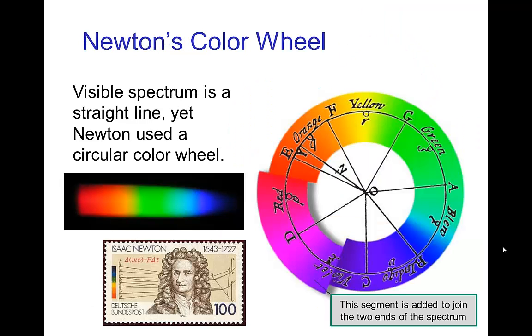Now, Isaac Newton, who studied mechanics and gravity and calculus and all that, he spent a lot of time studying color, and he did some of the first experiments with prisms and such to separate the spectra. And he organized color in the same way as painters in his time did, which was in a color wheel.